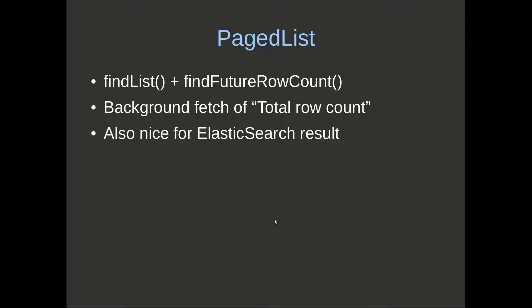Page list is really just a find list combined with a find row count — and more specifically a find future row count. This gives us the ability to do background fetching for the total row count. It's also a nice fit for Elasticsearch.